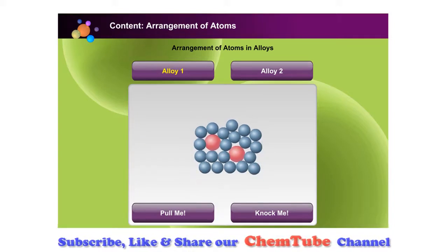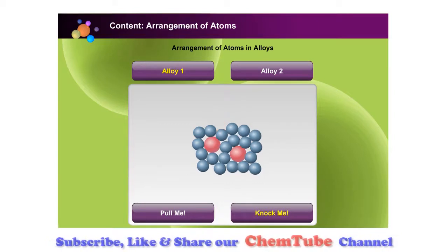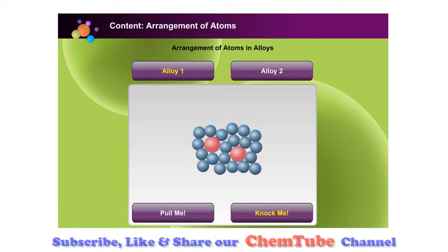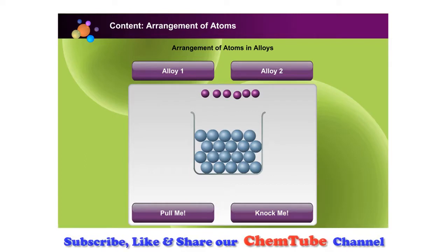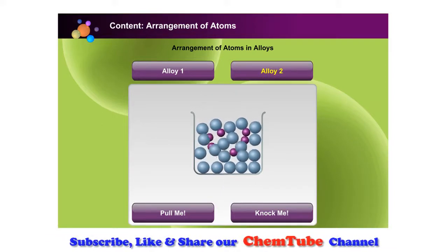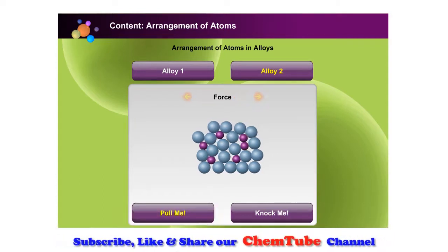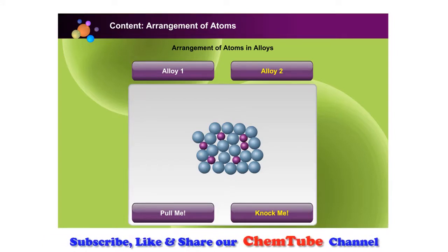Click on the Pull Me button to stretch it. Click on the Knock Me button to hit it with a hammer. What can you observe from the two animations? Why does the metal's ductility and malleability decrease when some bigger-sized atoms are added? Would it give a similar effect if we add some smaller-sized atoms to this metal? Click on the Alloy Two button to find out. Click on the Pull Me button to stretch it, then click on the Knock Me button to hit it with a hammer. What can you observe — does it give a similar effect to Alloy One? Why?